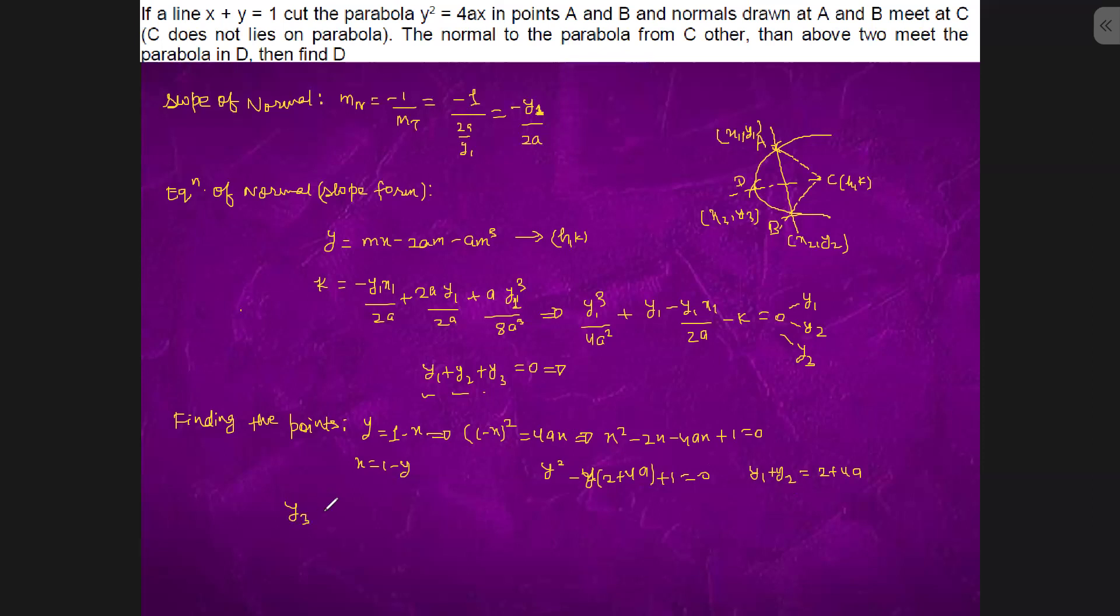So y1 plus y2 is what? 2 plus 4a. So we have y1 plus y2, y3 is what? 2 plus 4a, is it so? We will have to check first, okay. We should be coming y1 plus y2 equals to minus 4a. This would be the outcome. So we are working over this.